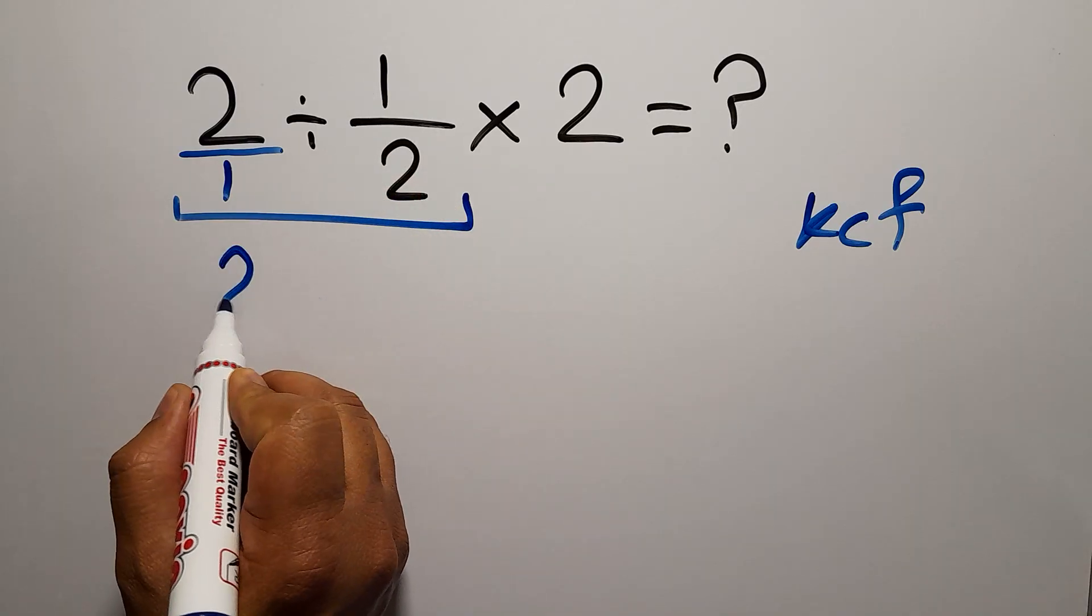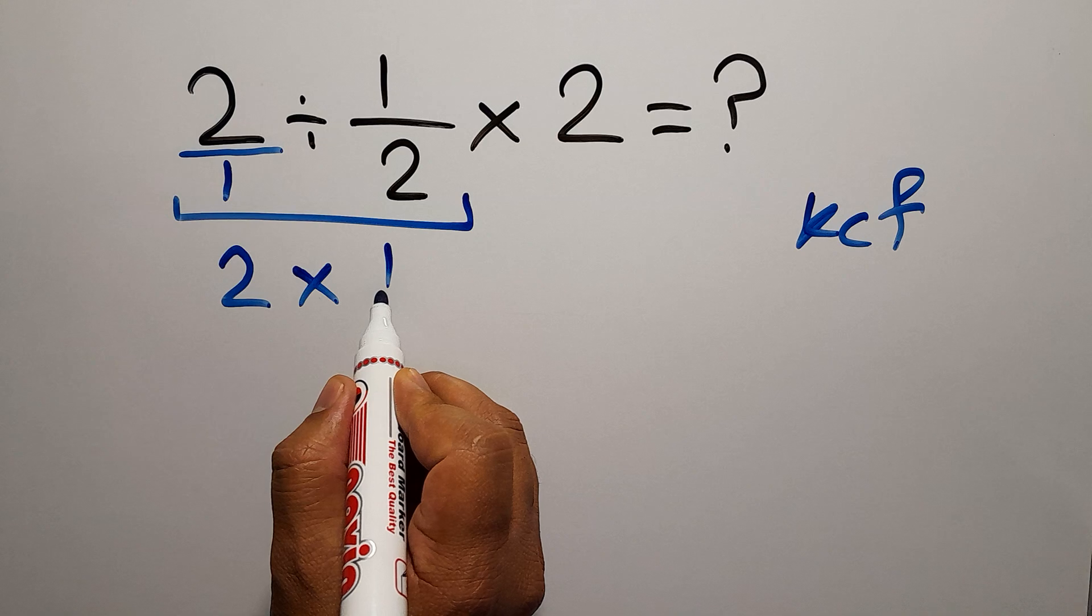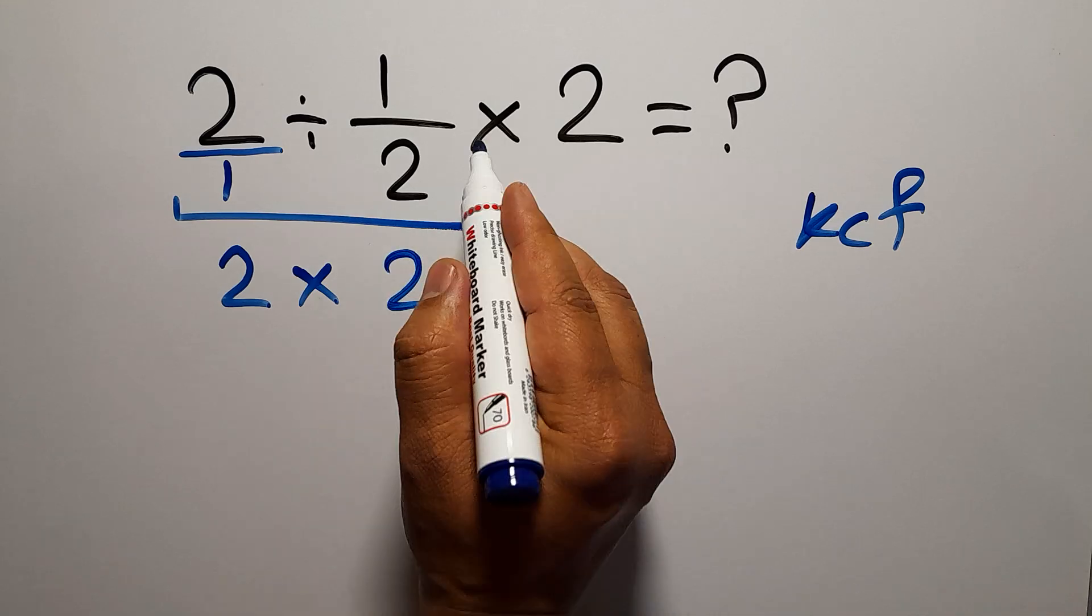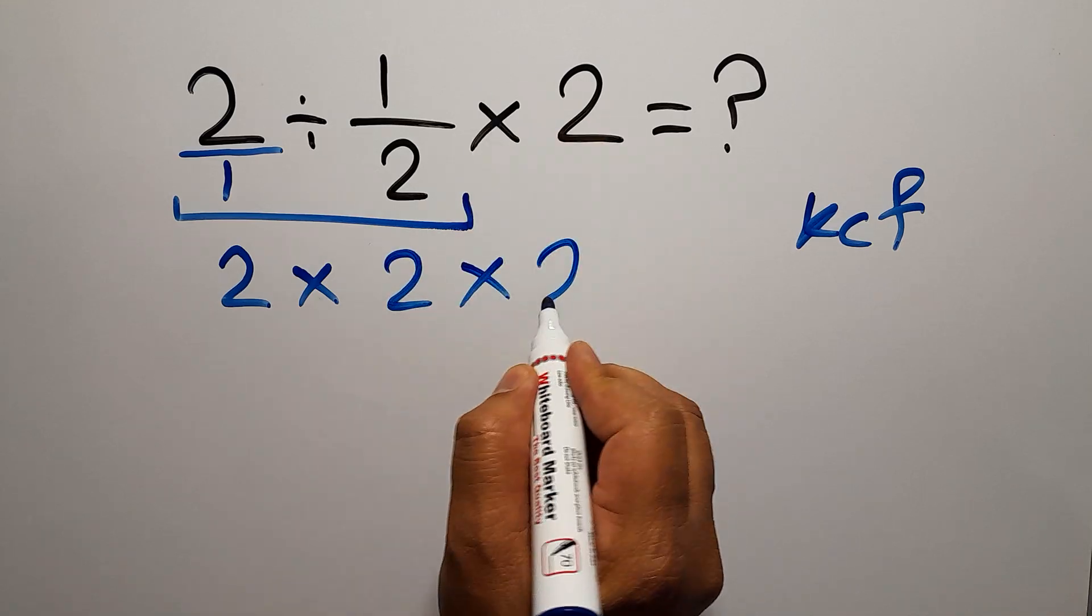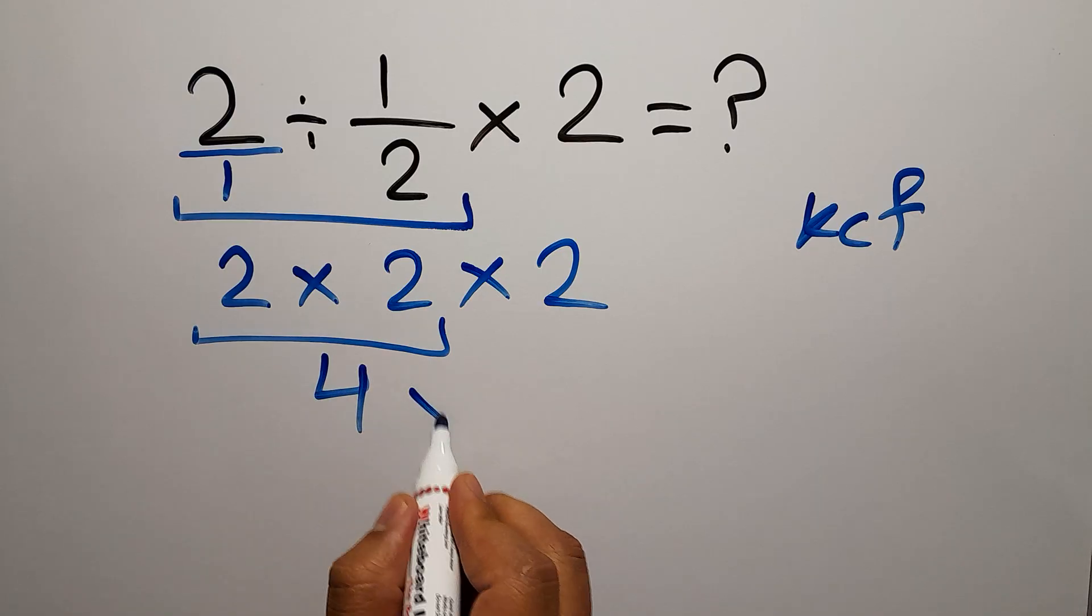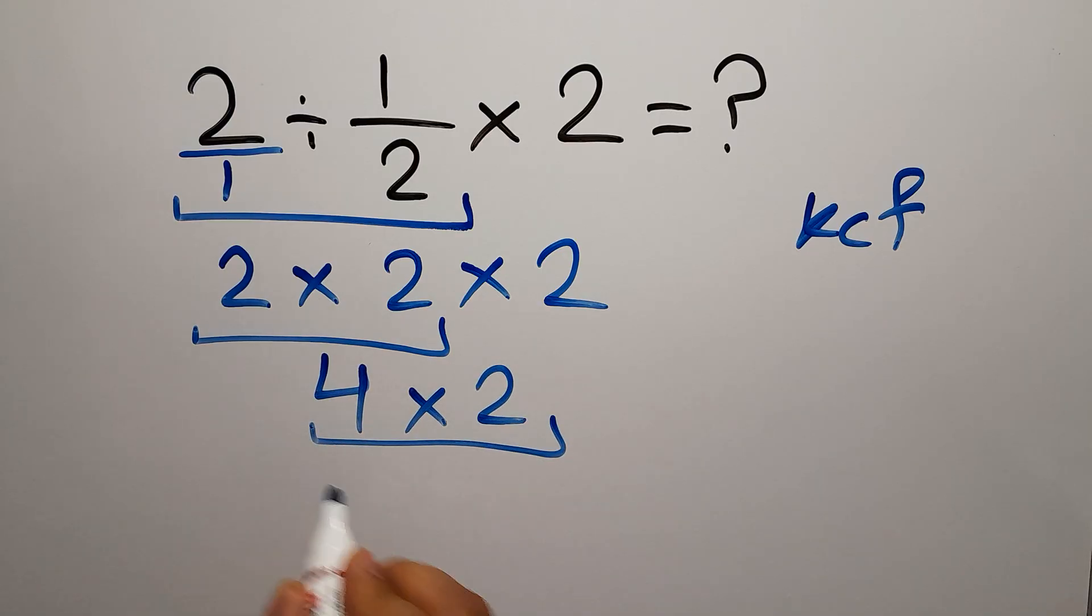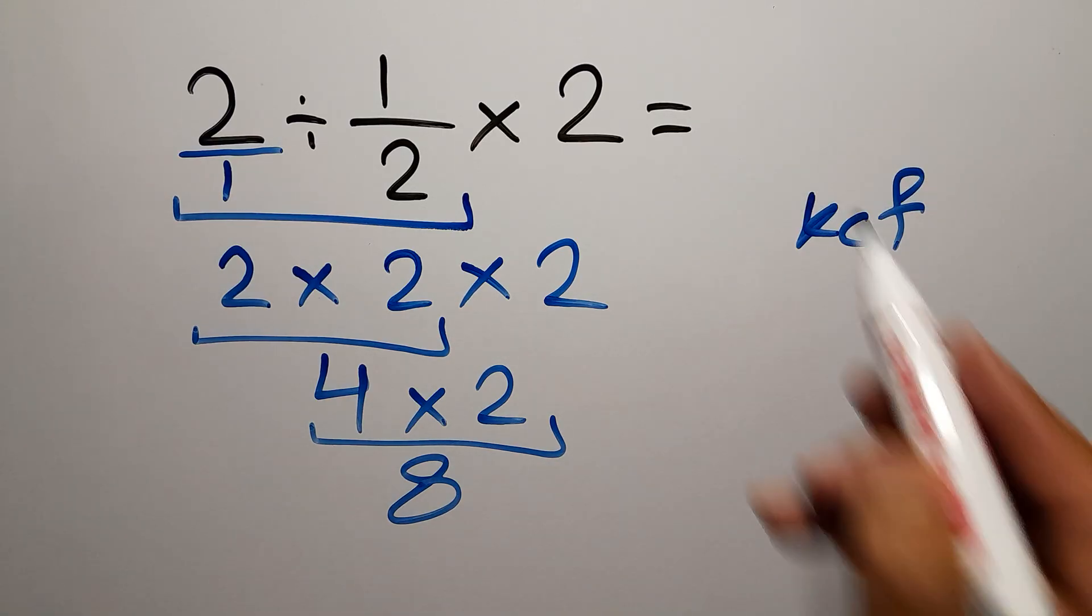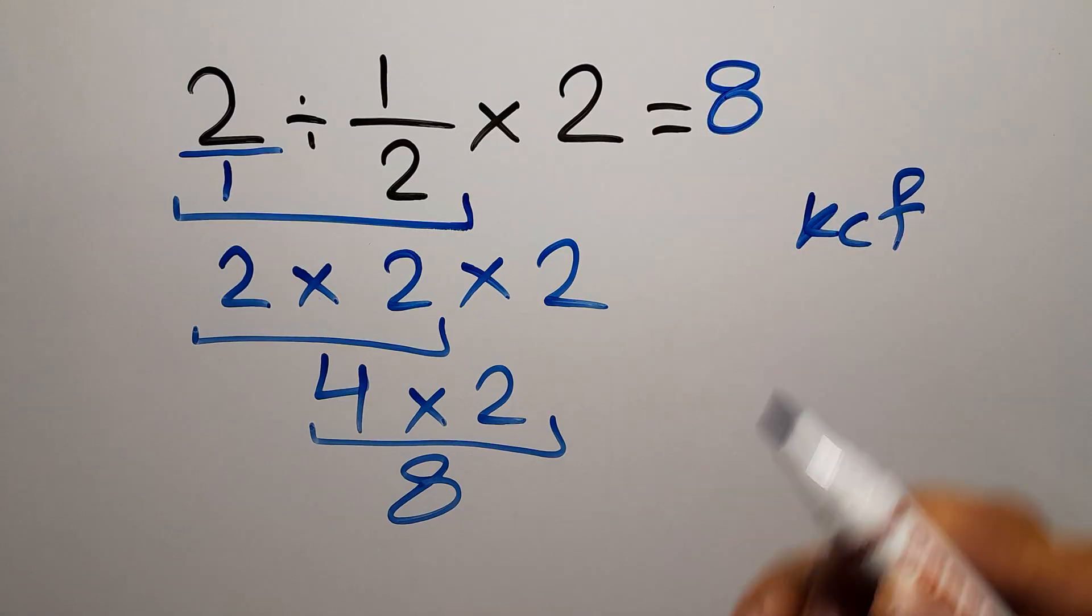So we can write 2 times 2, and then times 2 again. 2 times 2 gives us 4, and 4 times 2 equals 8. Therefore, our final answer to this problem is 8. The correct answer is 8.